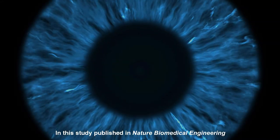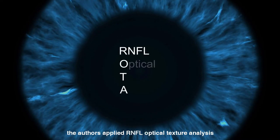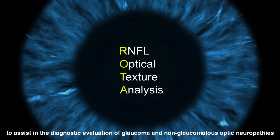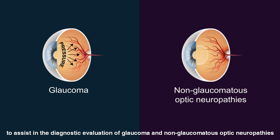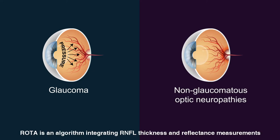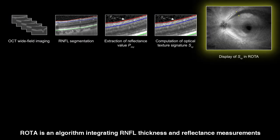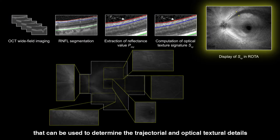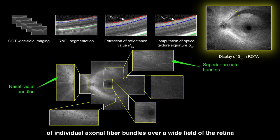In this study published in Nature Biomedical Engineering, the authors applied RNFL optical texture analysis, known as ROTA, to assist in the diagnostic evaluation of glaucoma and non-glaucomatous optic neuropathies. ROTA is an algorithm integrating RNFL thickness and reflectance measurements from standard OCT scans that can be used to determine the trajectorial and optical textural details of individual axonal fiber bundles over a wide field of the retina.